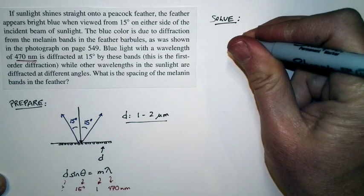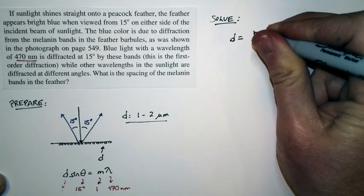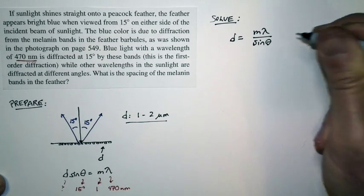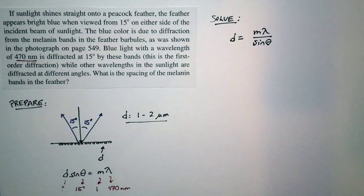Here's my relationship. D is equal to M times lambda divided by the sine of theta. And we know what to use for the different numbers.